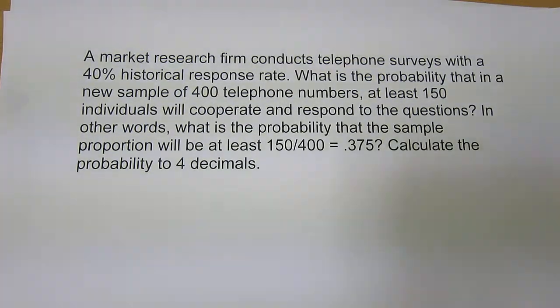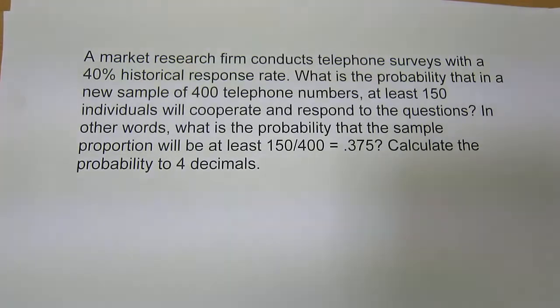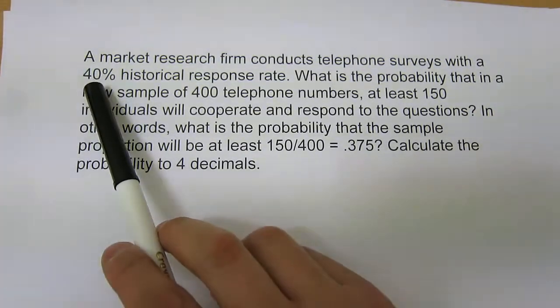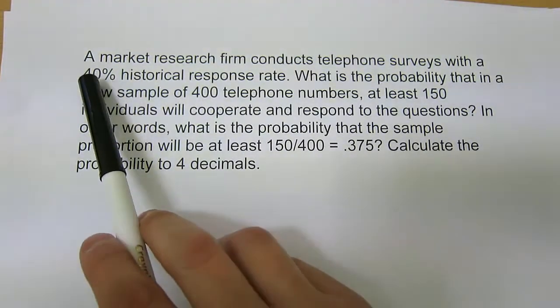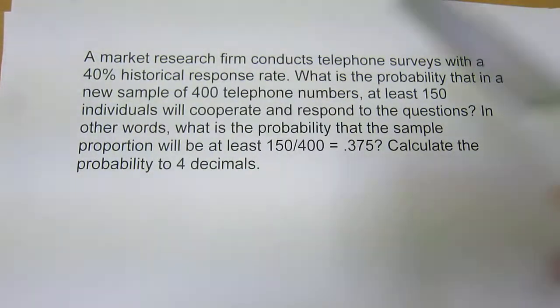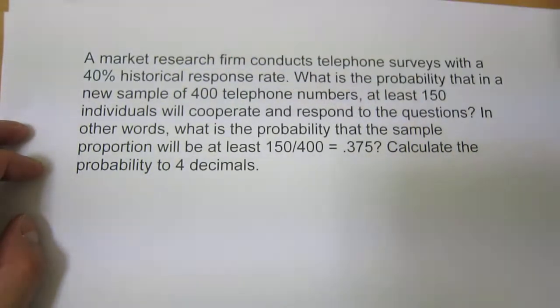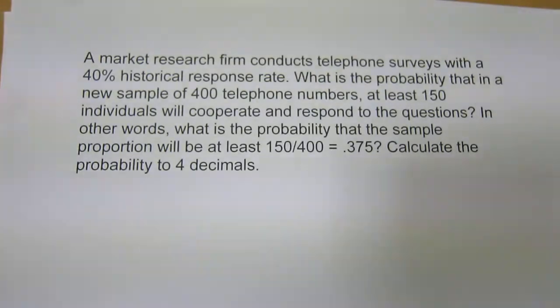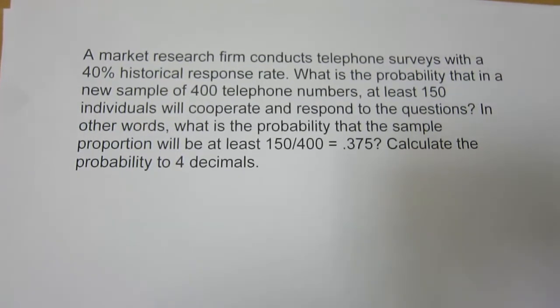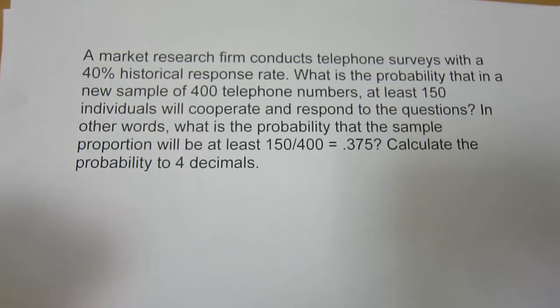The first thing we need to do is recognize that we're dealing with a proportion. This is a proportion because it tells us 40% or 0.4 is our historical response rate. Other proportions could be the proportion of boys to girls, or it could be 40% chance that your pickup line will work when you talk to a girl. It's a sort of proportion of success versus something else.